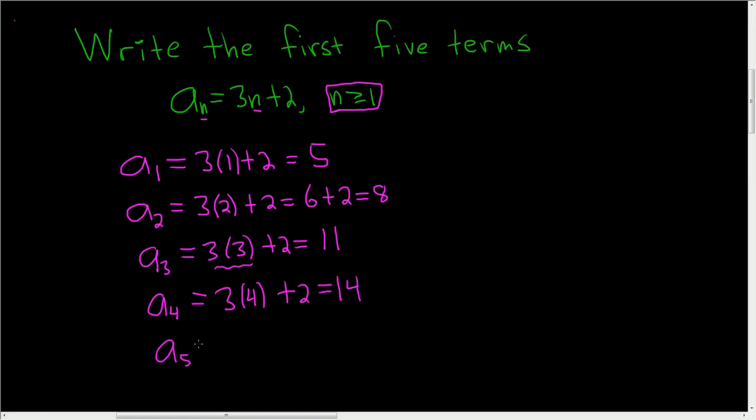a sub 5, replace every instance of n with a 5. So 3 times 5 plus 2. So 15 plus 2 is 17.